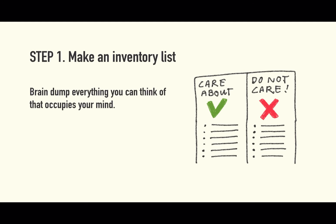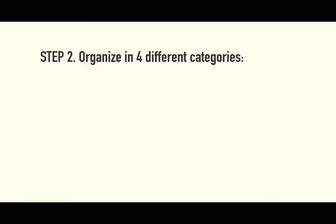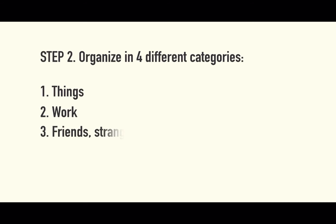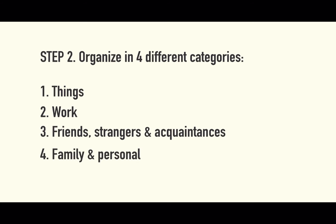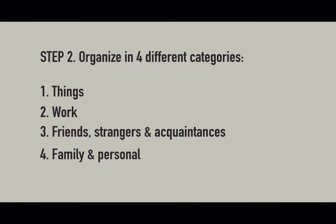Step 2 is to organize your list into four different categories: things, work, friends, strangers and acquaintances, and family and personal.